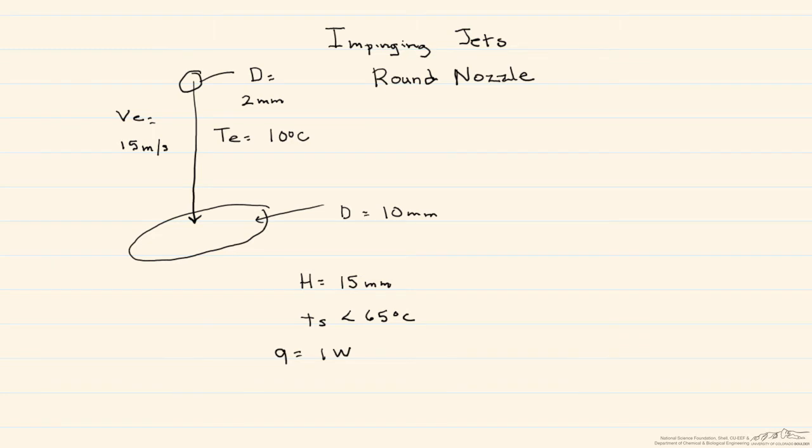In this screencast, I'm going to do an example of an impinging jet. What we're going to look at is a circular transistor that has a diameter equal to 10 millimeters.